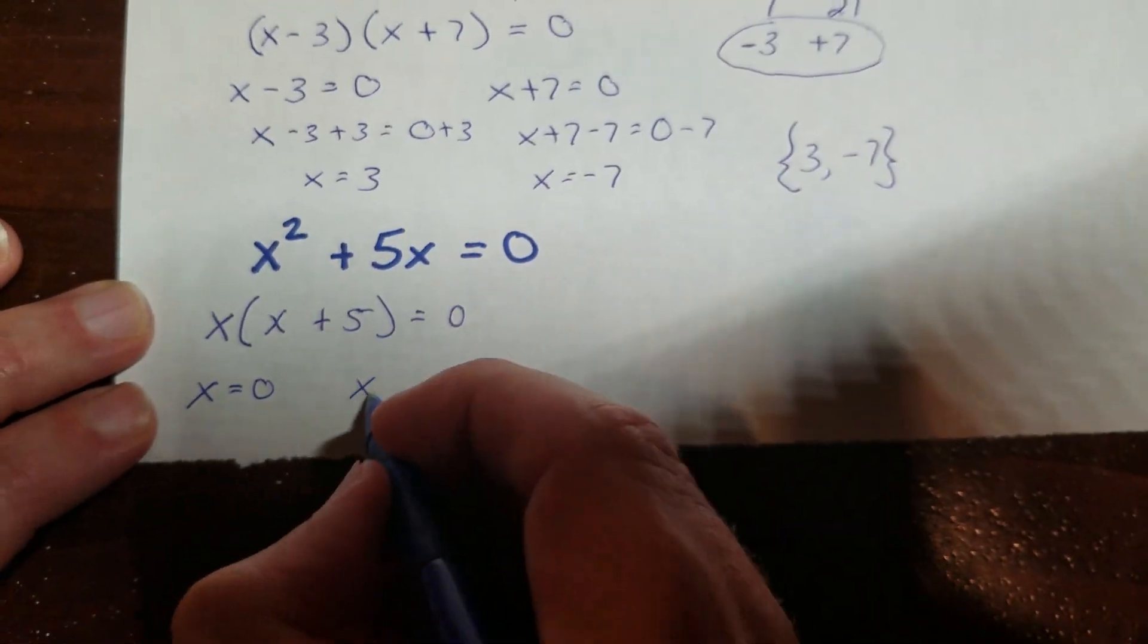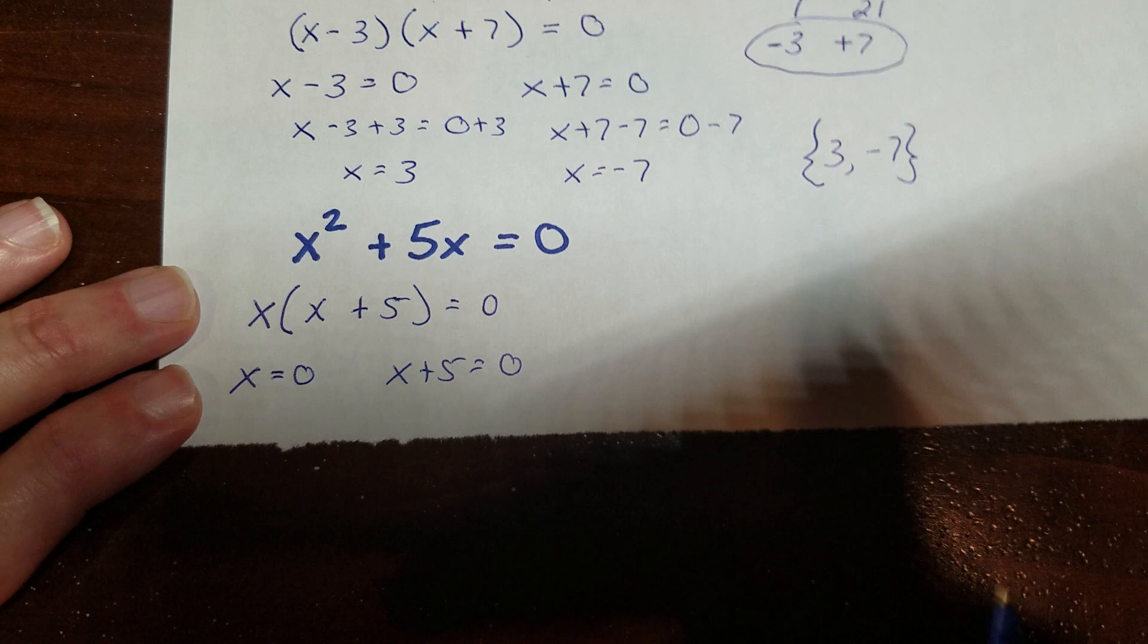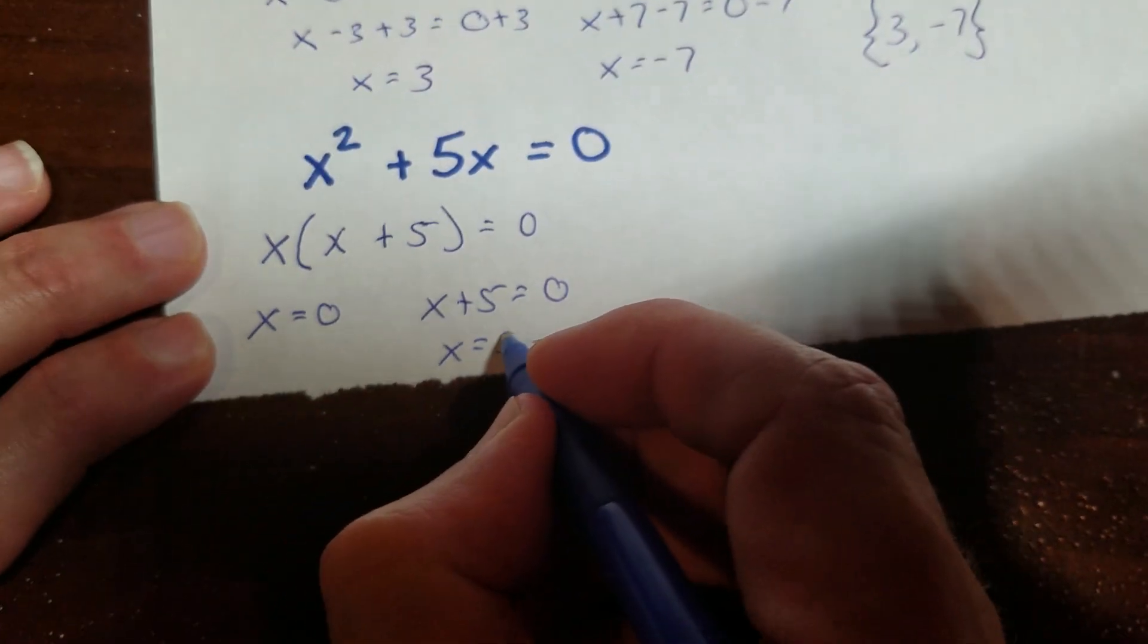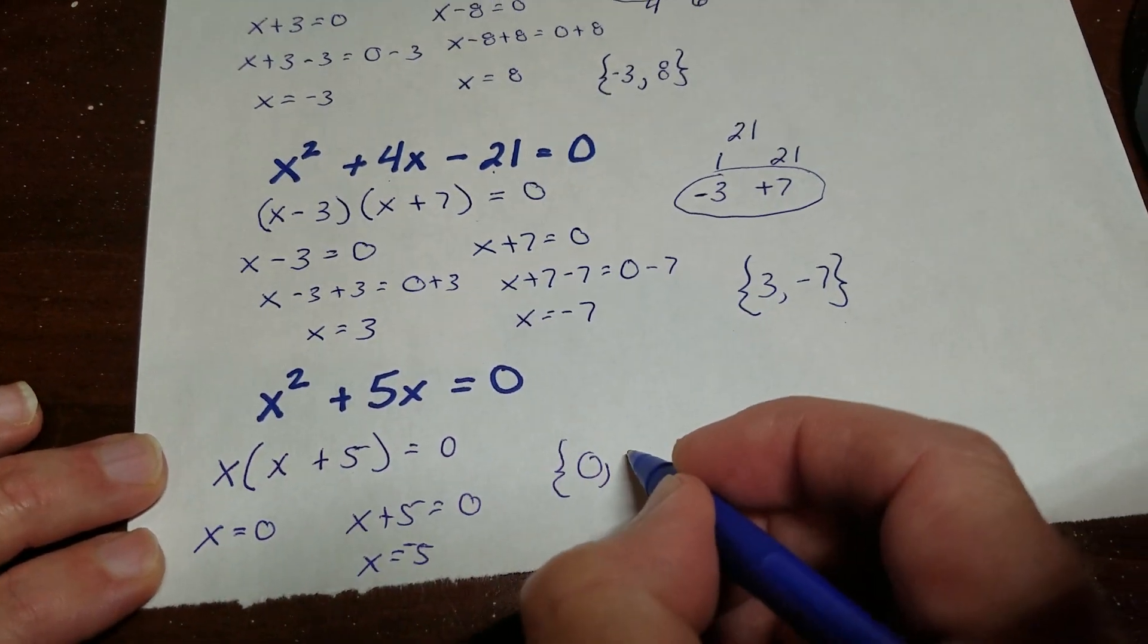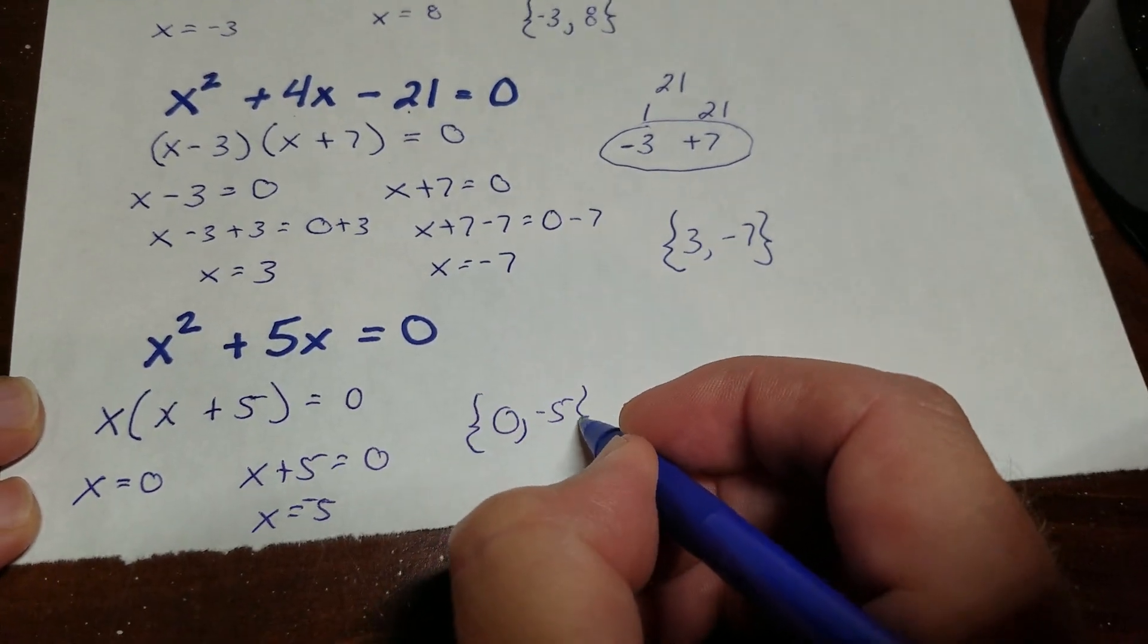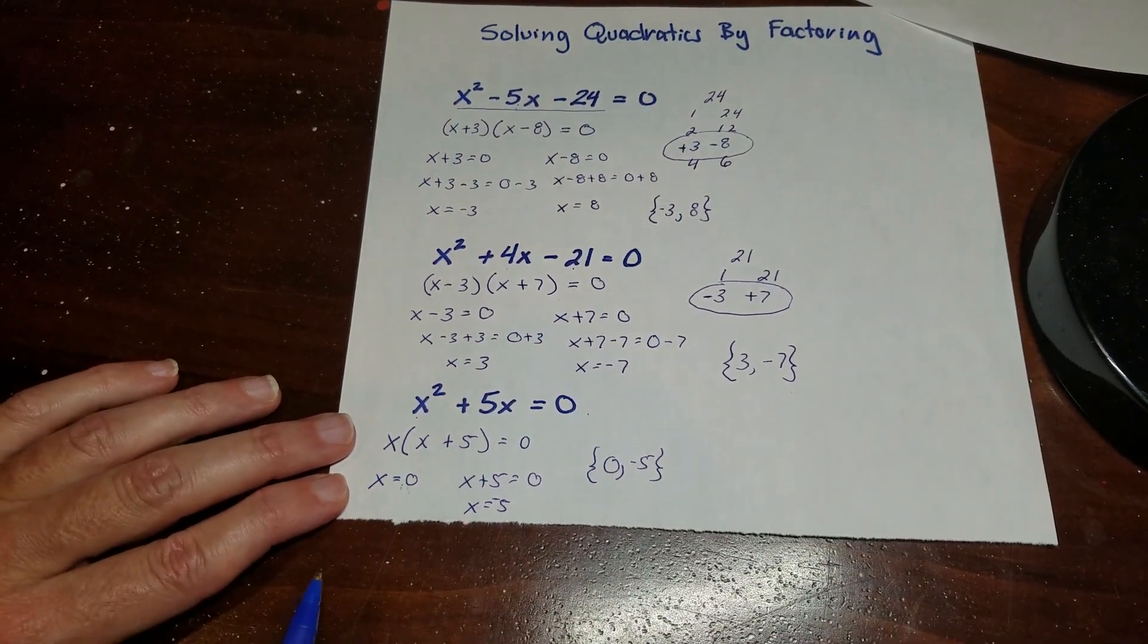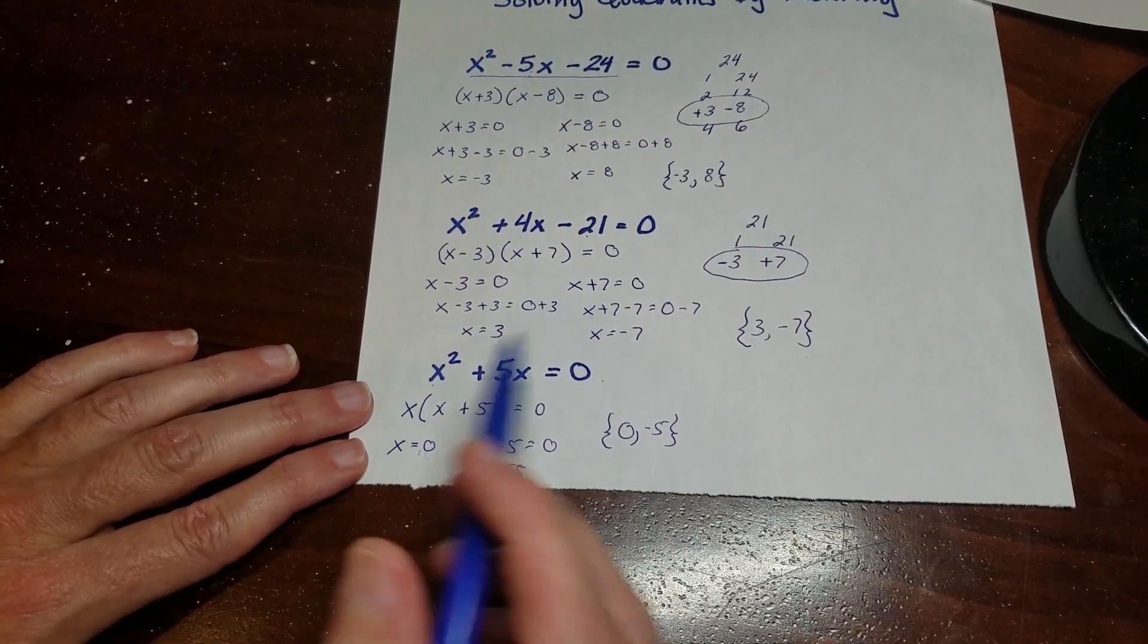And that's my two equations. I get x is equal to 0, and x plus 5 is equal to 0. And then this is just going to be x is equal to negative 5. So my solution is 0 and negative 5. So know that when you get something that looks like this, one of them is going to be 0. Because you're just going to pull an x out and it will be equal to 0.